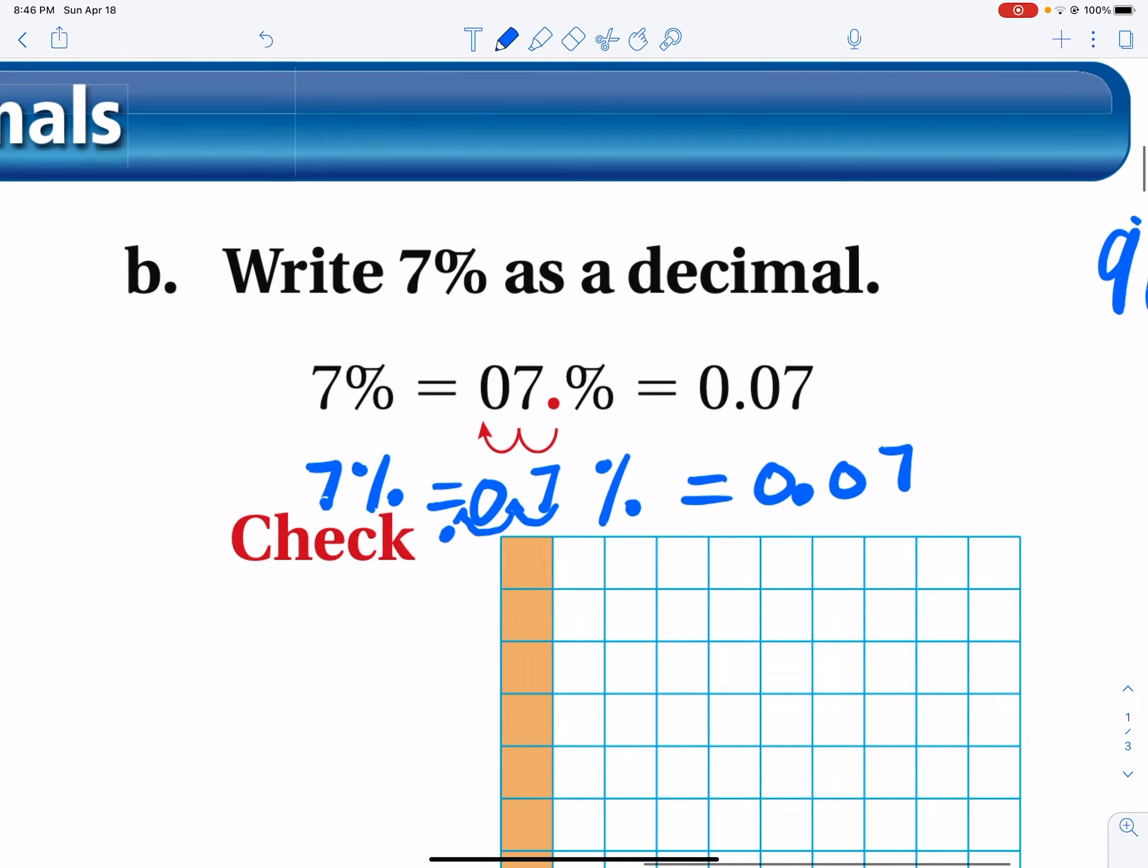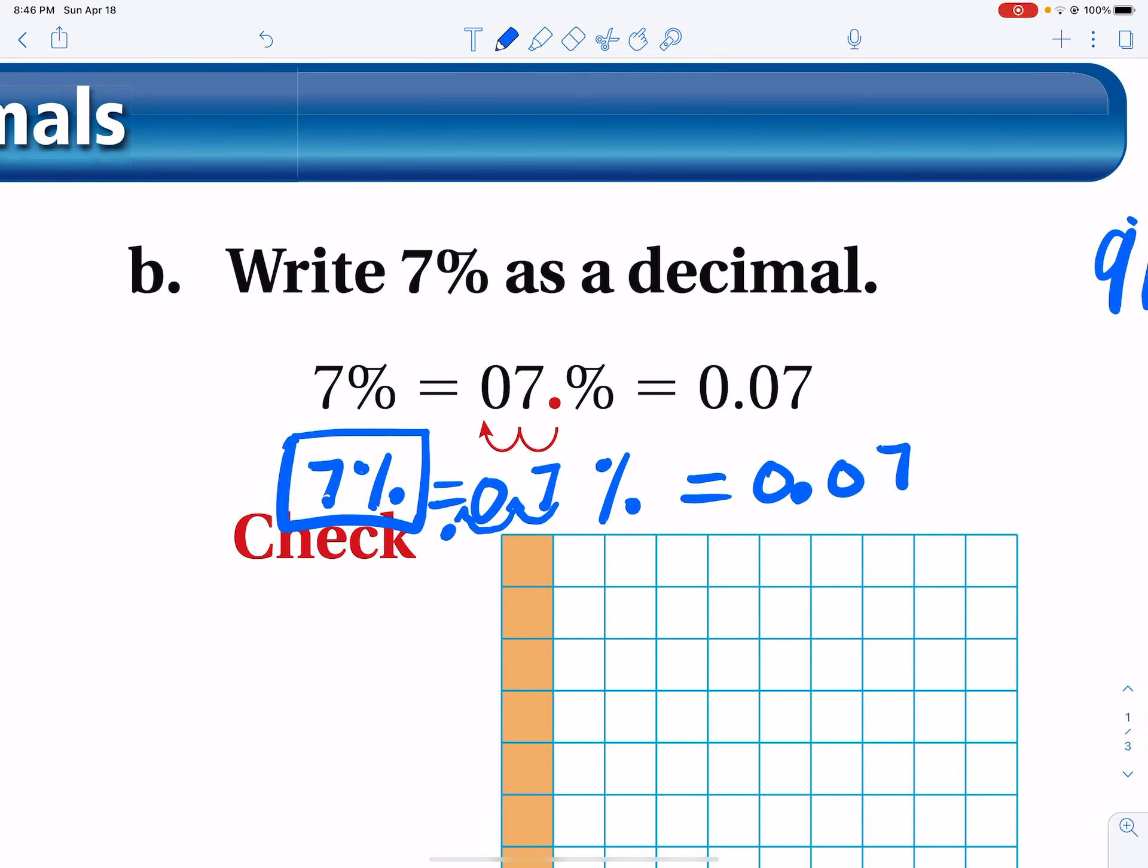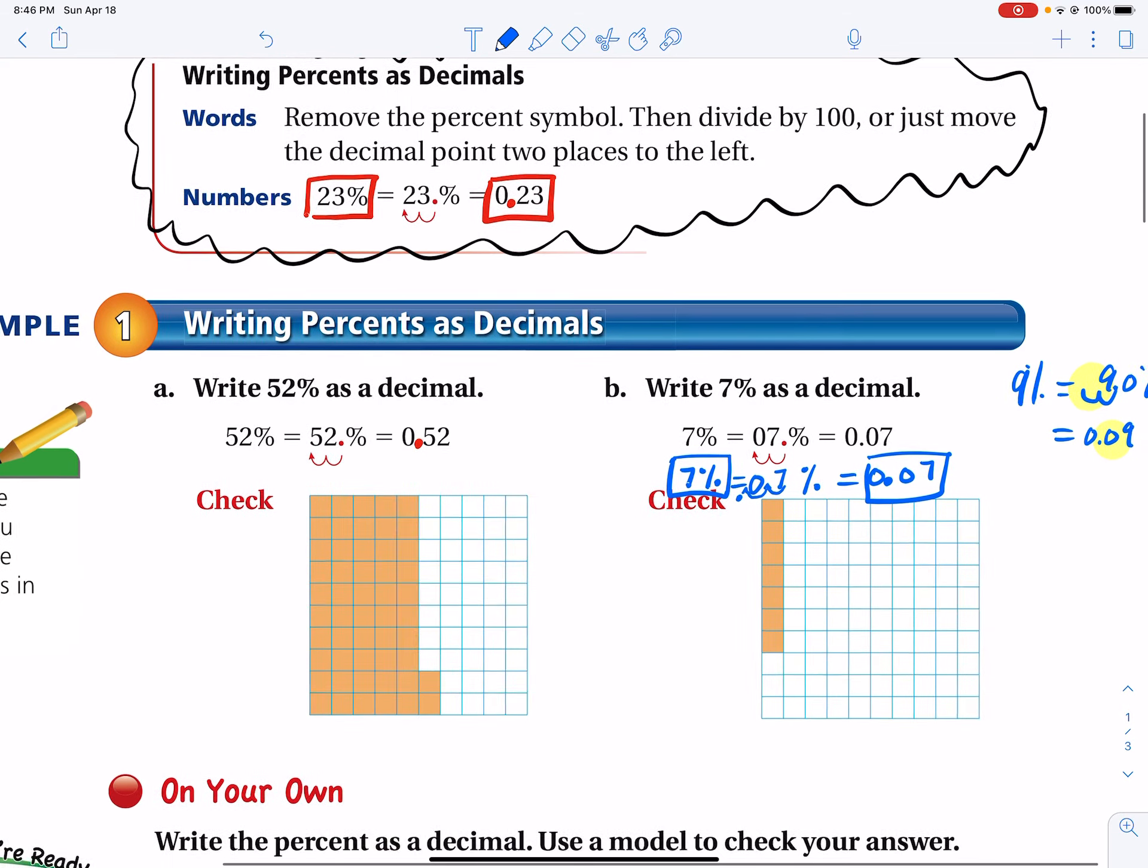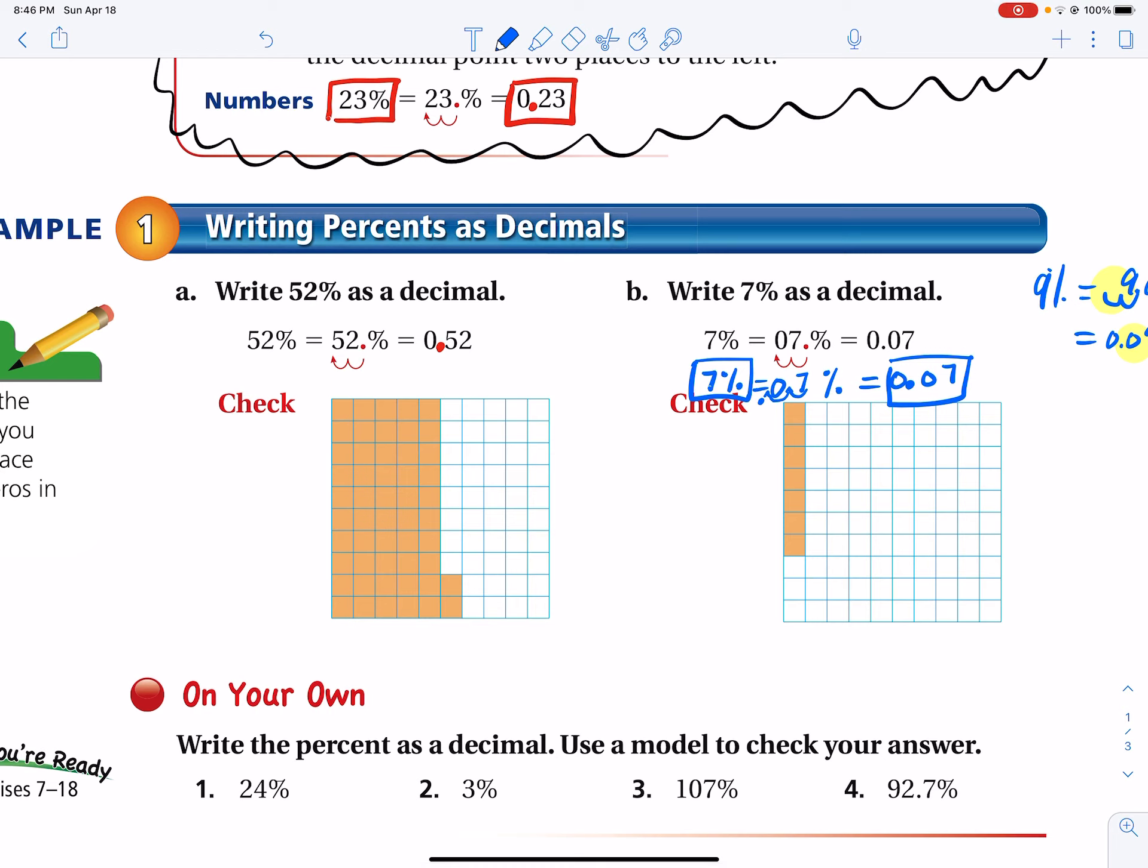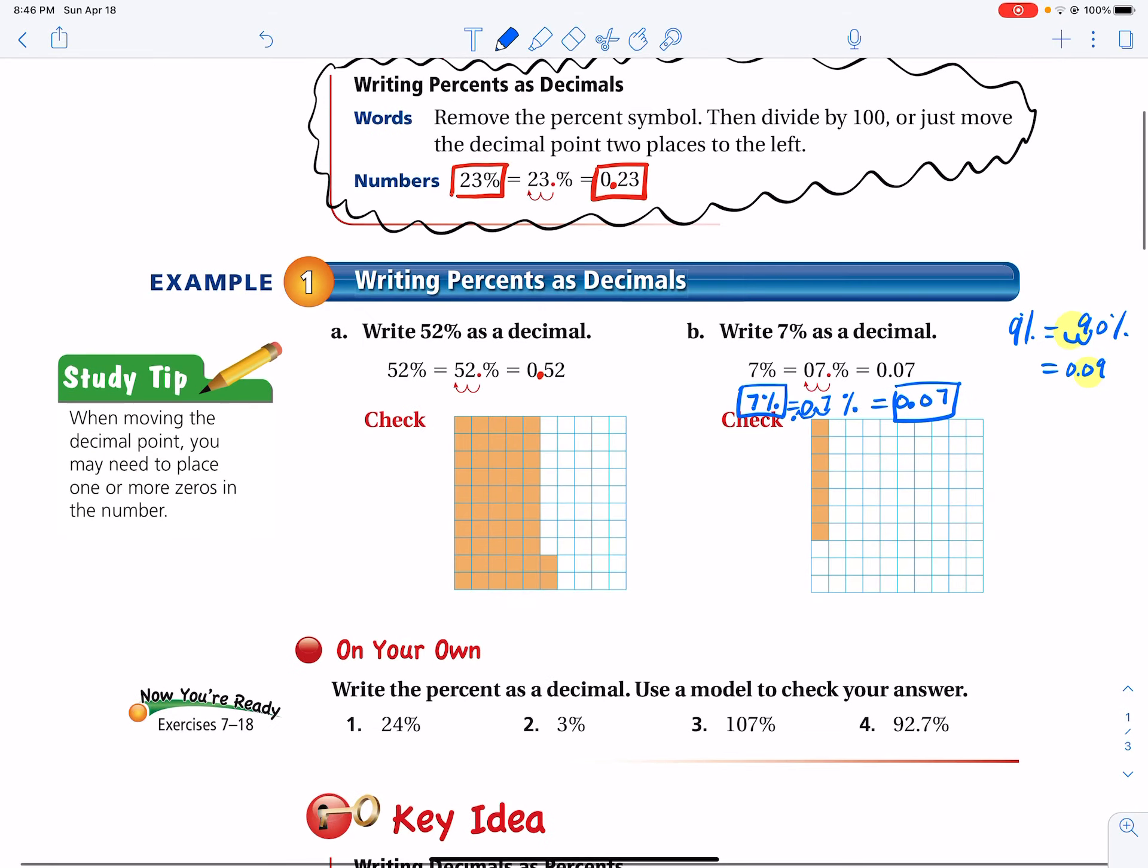And so we end up with 7 percent. And that is the decimal form. Then we have a diagram there that explains, you know, hundreds, 100 grid, a square grid. And you have 52 out of 100, 52 percent. 7 out of 100, 7 percent.